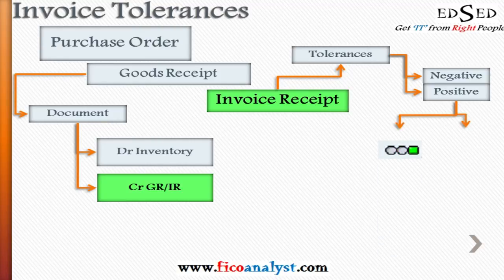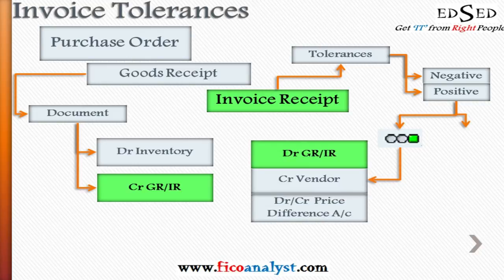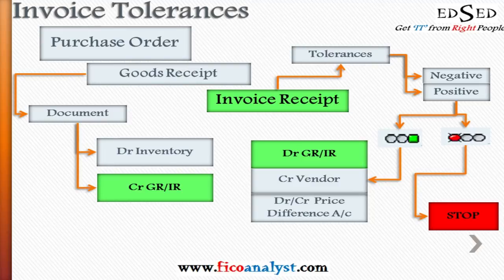If the invoice amount is within the tolerance limits, the result is green, and the system posts a credit to the vendor and a debit to the GR/IR account, with any difference posted to a difference account. If the invoice amount is not within the tolerance limit, the result is red and the system stops the process, preventing the document from being posted.